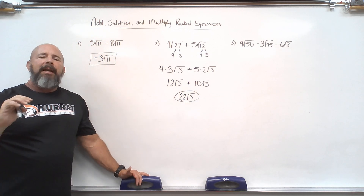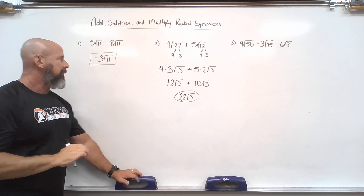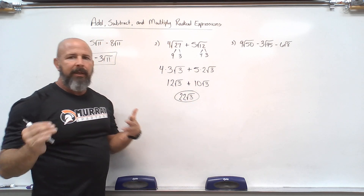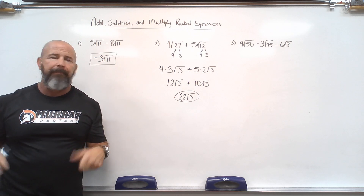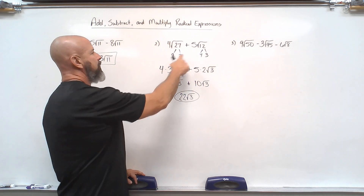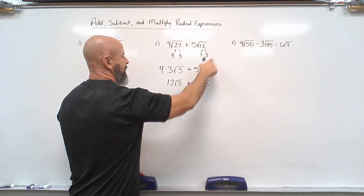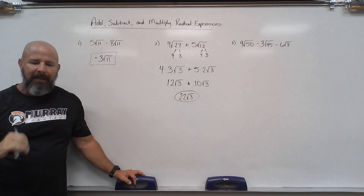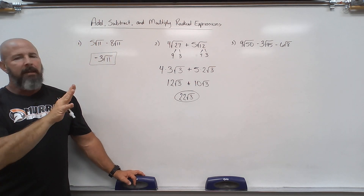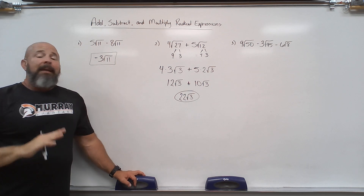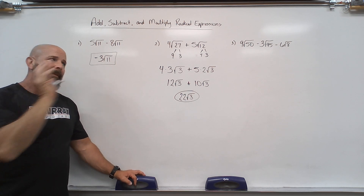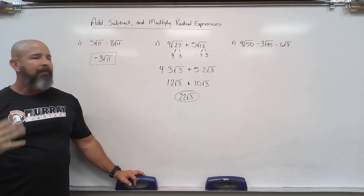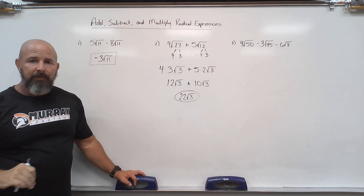The easy part is seeing if they're like or not — if they're like, I can put them together. The difficult part is sometimes I've got to do some extra work to get them simplified. Anytime I can simplify a radical, I need to. Now look at the third example: the easy part is that definitely none of them are the same, so I can't combine those terms.